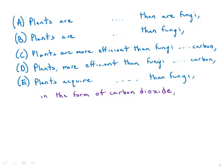Plants are more efficient at acquiring carbon than fungi in the form of carbon dioxide and converting it to energy-rich sugars. This is a rare case where what's following the underlined phrase gives us a big hint: 'in the form of carbon dioxide.' What can be in the form of carbon dioxide? Carbon can be in the form of carbon dioxide.